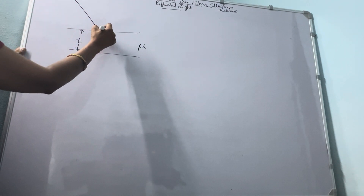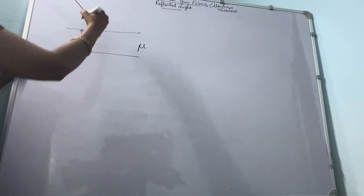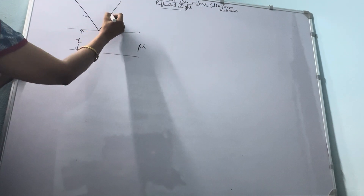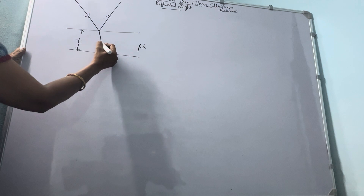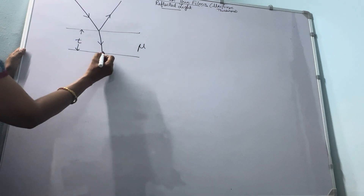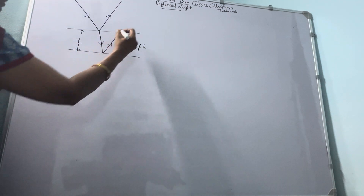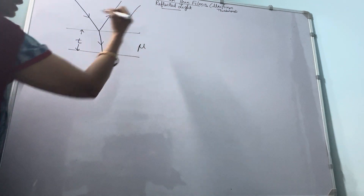This is our thin film of thickness T and refractive index mu. Here we have a source of monochromatic light from which light is incident on this thin film. Partially it is reflected and partially it is refracted inside the surface of refractive index mu. When it gets refracted, part of it will be reflected back in the same medium and the rest will be transmitted out.